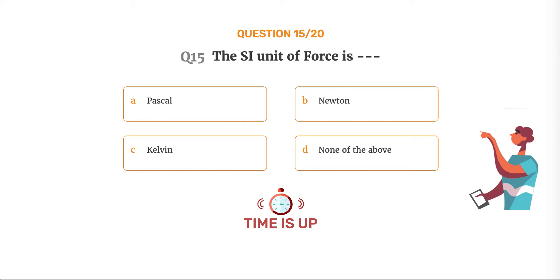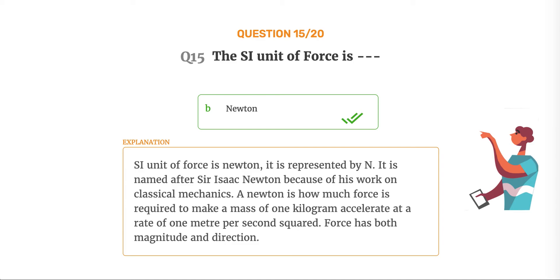The correct answer is Option B: Newton. SI unit of force is Newton, represented by N. It is named after Sir Isaac Newton because of his work on classical mechanics. A Newton is the force required to make a mass of 1 kg accelerate at a rate of 1 m per second squared. Force has both magnitude and direction.